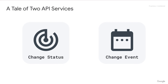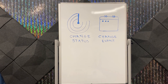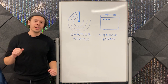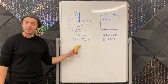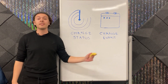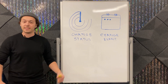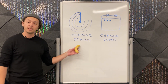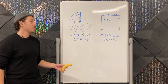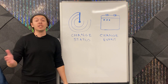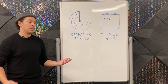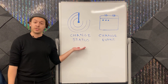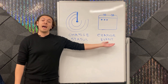A tale of two API services. Change History consists of two API services: the Change Status service and the Change Event service. These two services offer very different perspectives on the same underlying data. Change Status exposes an aggregate summary of changes, whereas Change Event exposes each change individually. One way to think about it: Change Status answers the question of 'did this change,' whereas Change Event answers the question of 'how did this change.'